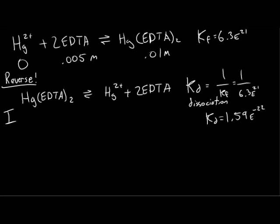We'll start by writing the initial molarities from our previous step. Our mercury complex was 0.01 molarity. Our EDTA was 0.005 molarity. Our mercury, we'll start with 0. We don't know what the change is, so we'll write minus x for our complex, plus x for our mercury, then plus 2x for the EDTA.